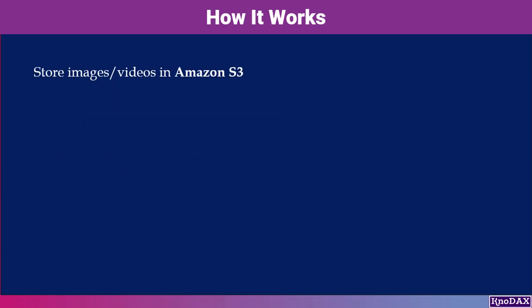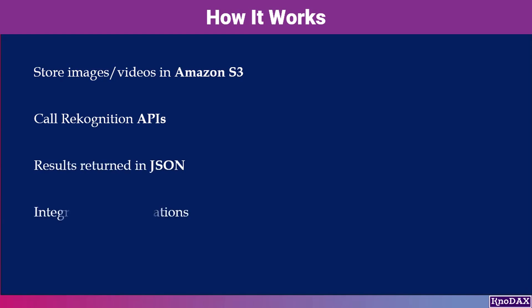Using Recognition is simple. First, you store your images or videos in Amazon S3. Then, you make an API call to Recognition. The analysis results come back in JSON format, which your applications can use for reporting, alerts, or automation.